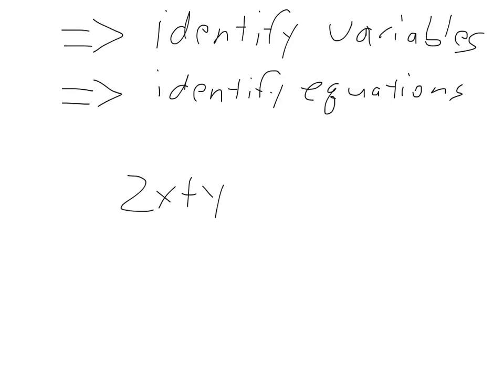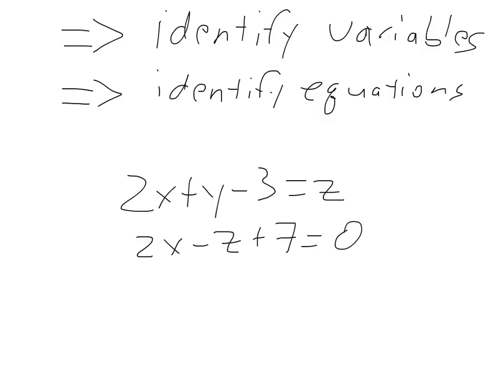So they start trying to solve equations that can't be solved — writing down things like 2x plus y minus 3 equals z, and then 2x minus z plus 7 equals 0 — and then they'll start doing algebra and plugging and chugging, without even realizing they can't solve it because they're missing a third equation for three variables x, y, and z.